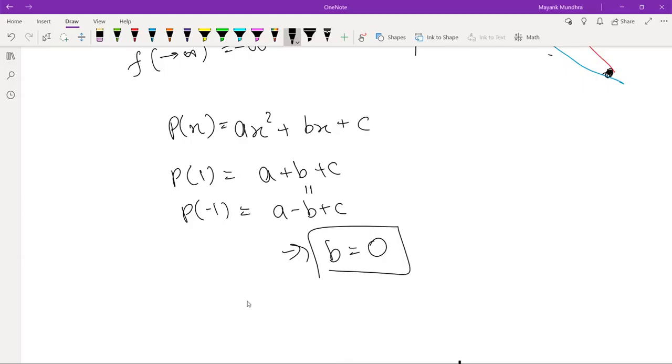What is B? What is this B? B equals 0, meaning the sum of the multiplication of roots is going to be C by A and the sum of roots is minus B by A.